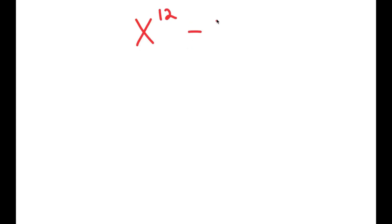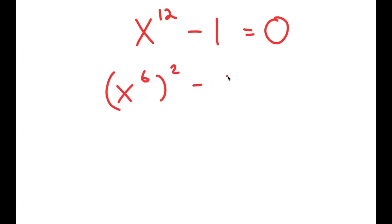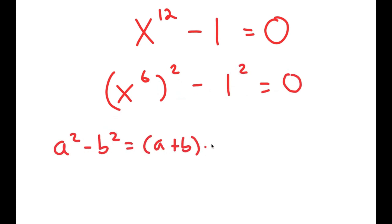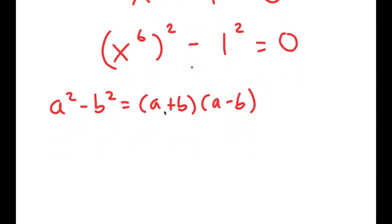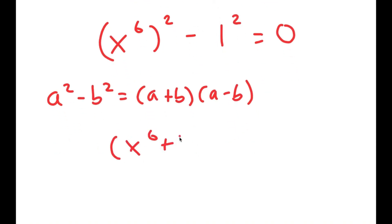In this video, I'm going to solve the equation x to the power of 12 minus 1 is equal to 0. To solve this, I'm going to first rewrite this as x to the power of 6, squared, minus 1 squared equals 0, so I can use the property a squared minus b squared equals a plus b times a minus b. This turns into x to the power of 6 plus 1, times x to the power of 6 minus 1, equals 0.